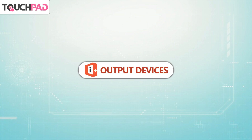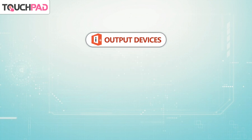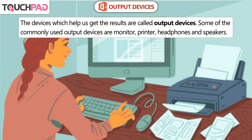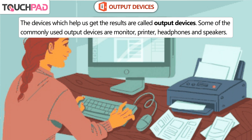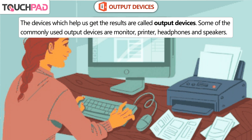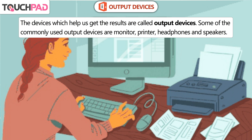Output Devices. The devices which help us get the results are called Output Devices. Some of the commonly used output devices are Monitor, Printer, Headphones and Speakers.